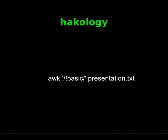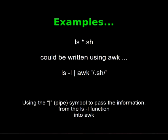The first example we're going to look at: if we look at the ls command and we do ls star dot sh, we could write this using AWK by piping the output of ls dash l into AWK and then AWKing out the regex value of dot sh. So we're using the pipe symbol to pass the information from ls into AWK, which is the important bit. Anything that ls dash l outputs will be taken and used by AWK.